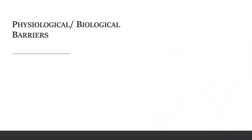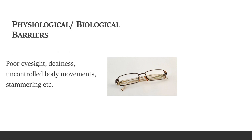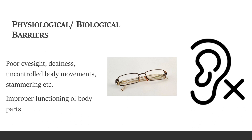Let's now have a look at physiological or biological barriers. These are related to a person's health and fitness, and may arise because of disabilities that a person may have — for example, poor eyesight, stiffness, uncontrolled body movements, or even stammering. Improper functioning of body parts may include the improper functioning of vocal organs to produce sound or speech. Sometimes even hands or fingers not working properly may cause uneasiness during communication. Ears, which take in spoken words, and eyes, which absorb written words, are all associated with a person's physique, and hence these are called physiological barriers.